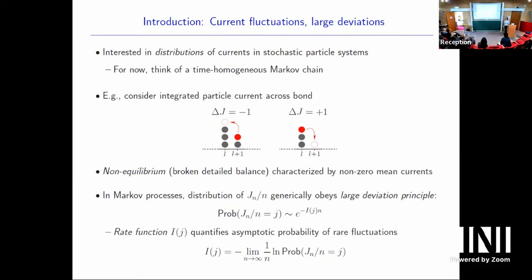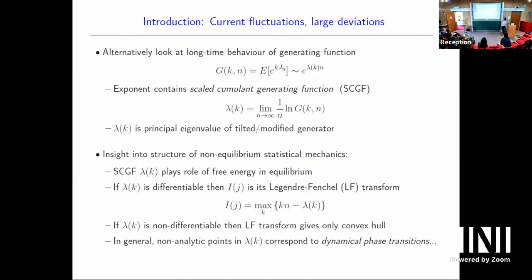Another approach is to look at a generating function. Define G for n time steps with conjugate parameter k as the expectation of the exponential of k times the integrated current. Under fairly general conditions for Markov processes, this asymptotically has an exponential form where the exponent is the so-called scaled cumulant generating function (SCGF). As we heard in Hugo's talks, you can often find this lambda(k) as the principal eigenvalue of some tilted or modified generator.